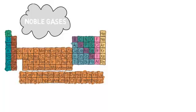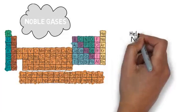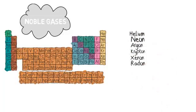The noble gases are placed in group 8 or group 0 in the periodic table. We have neon, radon, krypton, xenon, and helium. They're the most unreactive of all elements because they have a full outer shell.